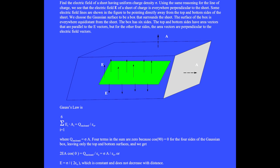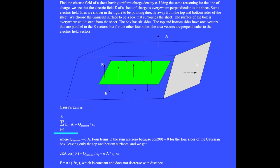The box has six sides. The top and bottom sides have area vectors parallel to the electric field vectors, but for the other four sides the area vectors are perpendicular to the electric field, giving theta equals 90 degrees and cosine 90 equals zero. Gauss's law is the sum of the six dot products over the six surfaces equal to the enclosed charge over epsilon zero, where the enclosed charge is sigma times the area A of the sheet. The four side terms vanish, leaving 2E times A times cosine zero equals sigma A over epsilon zero. The electric field E equals sigma over 2 epsilon zero, which is constant and does not decrease with distance.